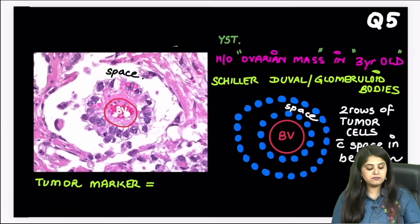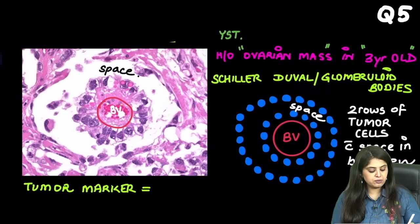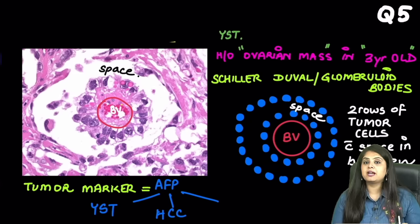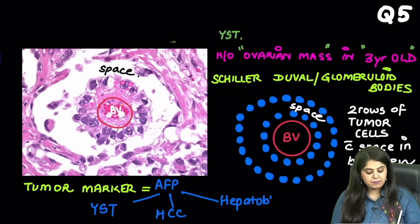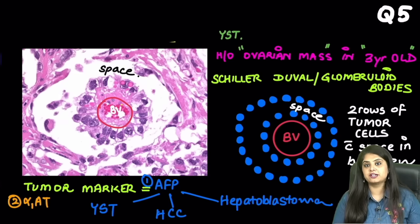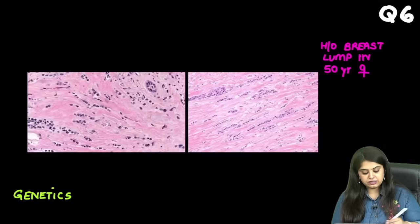The PYQ for yolk sac tumour is very obvious: the tumour marker is always alpha-fetoprotein. Alpha-fetoprotein is number one for yolk sac tumour, and also a tumour marker for two liver tumours: hepatocellular carcinoma and the childhood liver tumour hepatoblastoma. Additionally, for NEAT PG students, please note that alpha-1 antitrypsin can also be a tumour marker for yolk sac tumour.